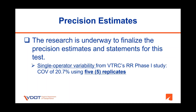The research is underway to finalize the precision estimates and statements for this test. Single operator variability from VTRC's round robin phase one study is 20.7% in terms of coefficient of variation, based on using five replicates. This is not part of the VDOT-BMD spec for the 2021 construction season and has not been finalized yet. However, this is presented to give a sense of single operator variability you may expect from this test.